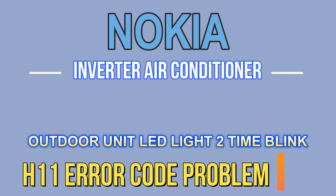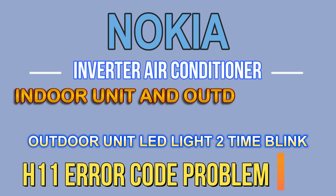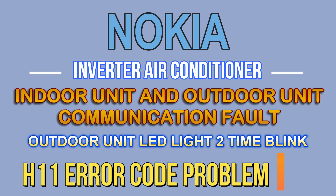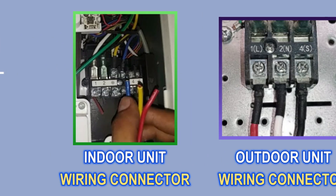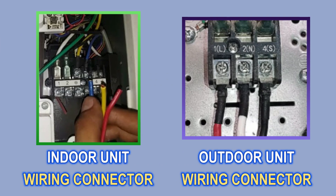If H11 error is coming in a Nokia inverter AC and the outdoor unit LED light is blinking two times, then this error is an indoor unit and outdoor unit communication fault. This error can occur in your AC due to four reasons.